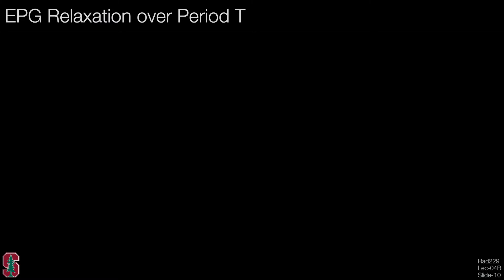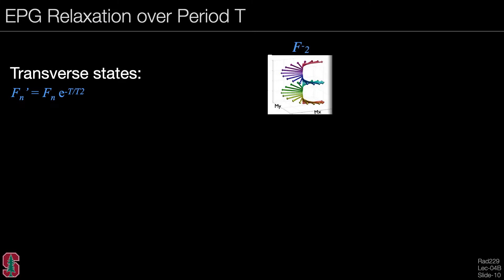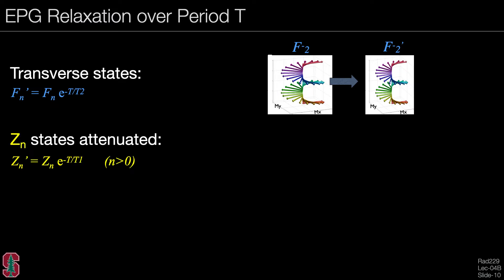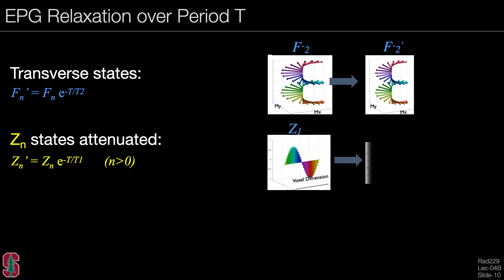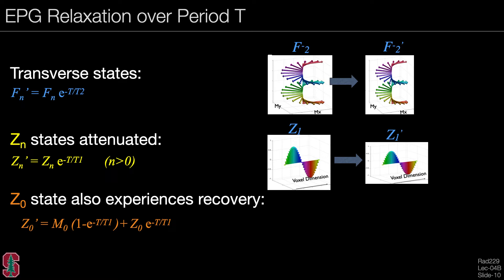Let's now look at relaxation over a period T. The transverse states are attenuated just as transverse magnetization is attenuated. So this is fairly intuitive. So this is an example of the F minus sub two state and it's attenuated. The longitudinal states are also attenuated. And for n greater than zero, there's just a simple attenuation. In this case, by capital E sub one or e to the minus T over T1. And this looks like this. And for the Z zero state, there is both attenuation as well as recovery as shown by this equation. And this will look something like this.